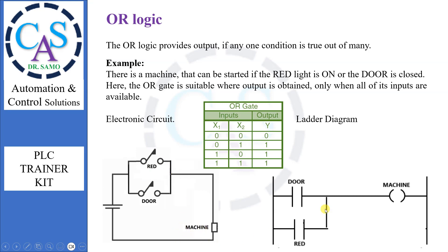Similarly, from the ladder diagram, only one contact should be connected or closed to switch on the machine. From the table it can be seen that: if both inputs are low, then output will be low. If input 1 is low and input 2 is high, then the output will be high. If input 1 is high and input 2 is low, then the output will be high. If both inputs are high, then the output will be high.